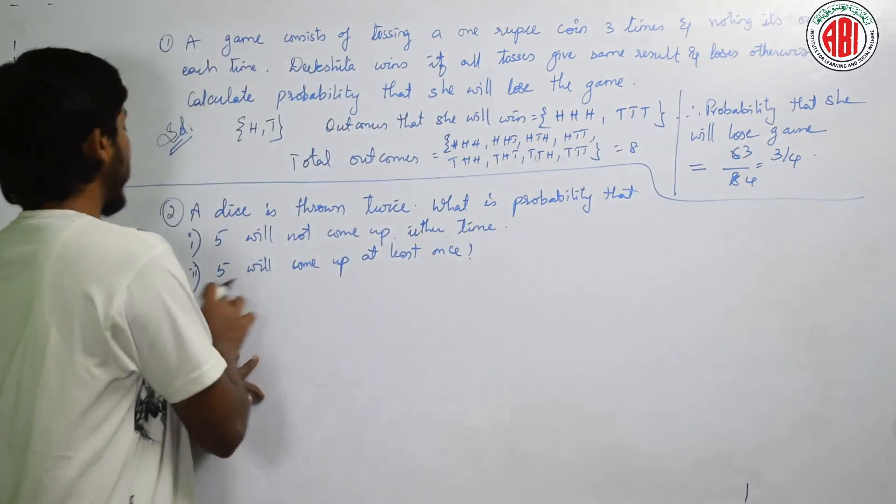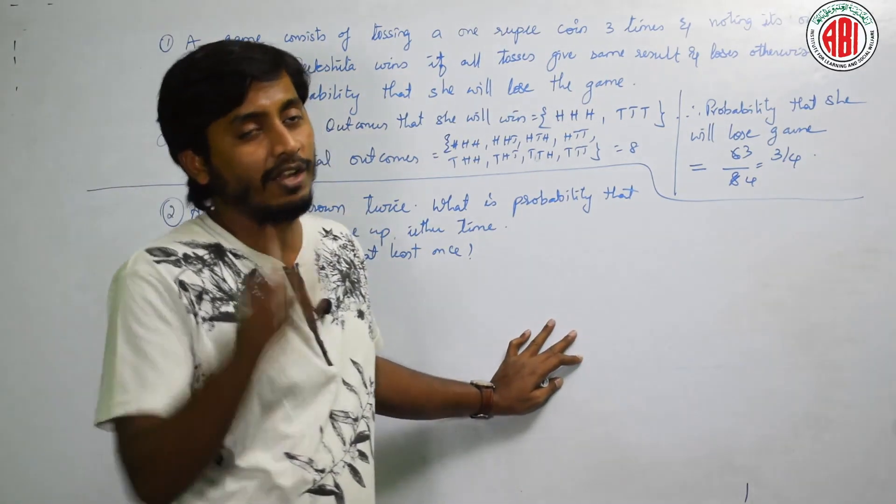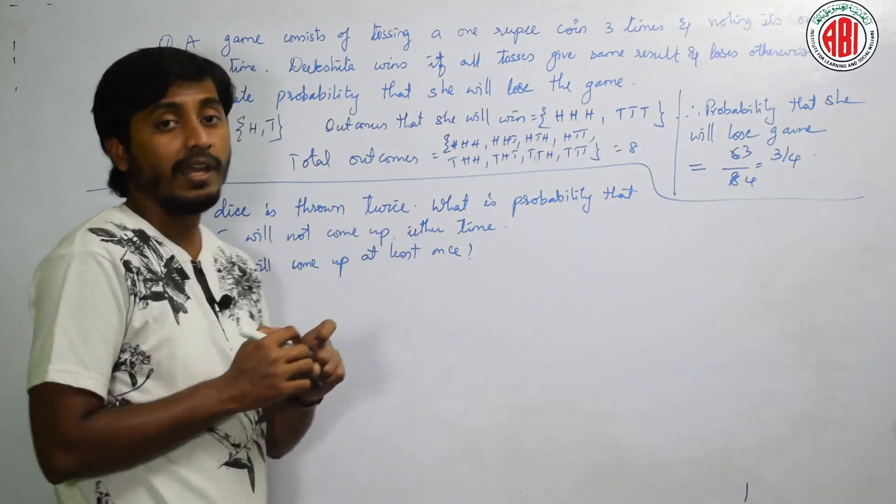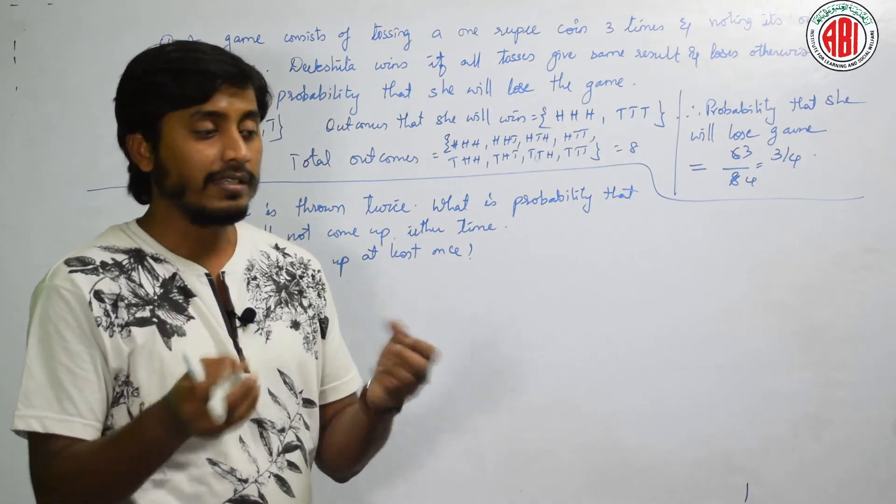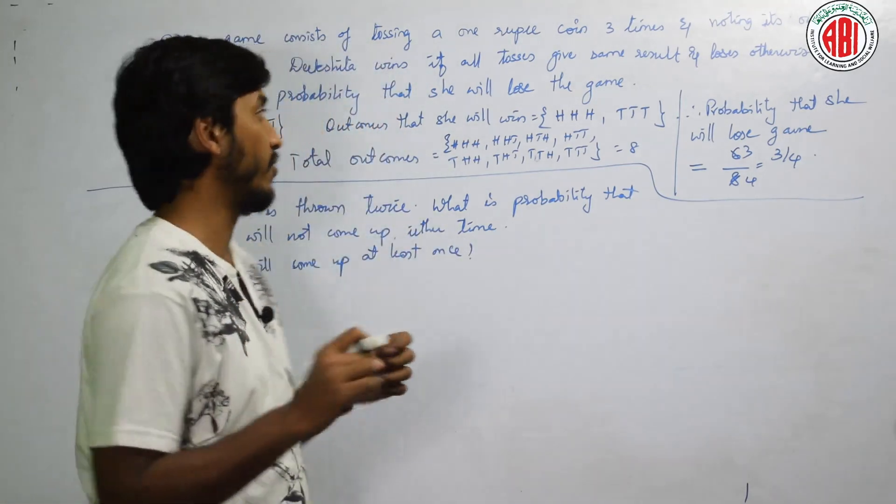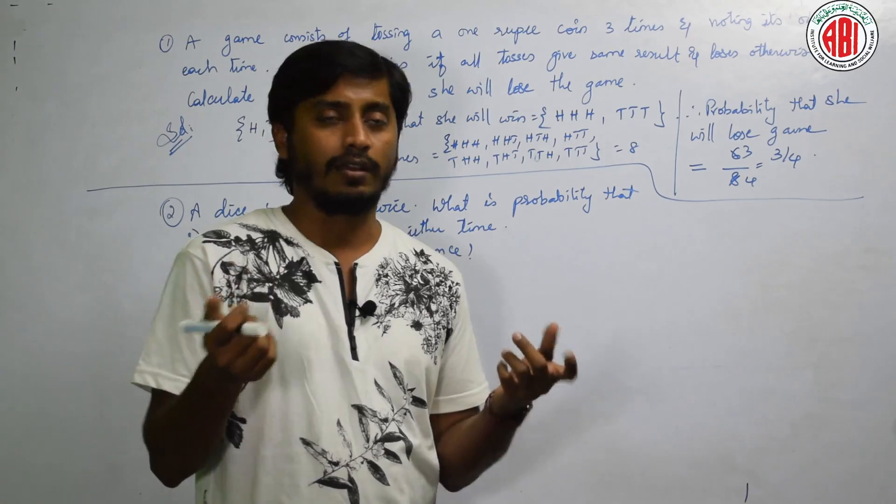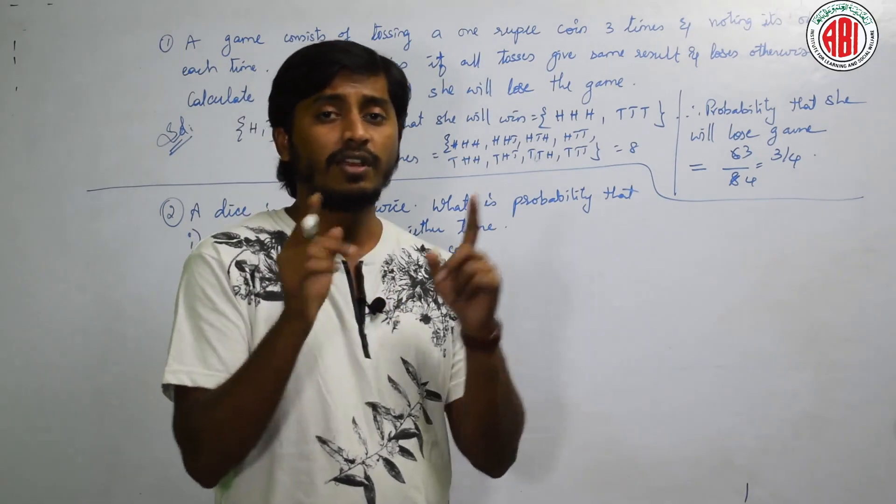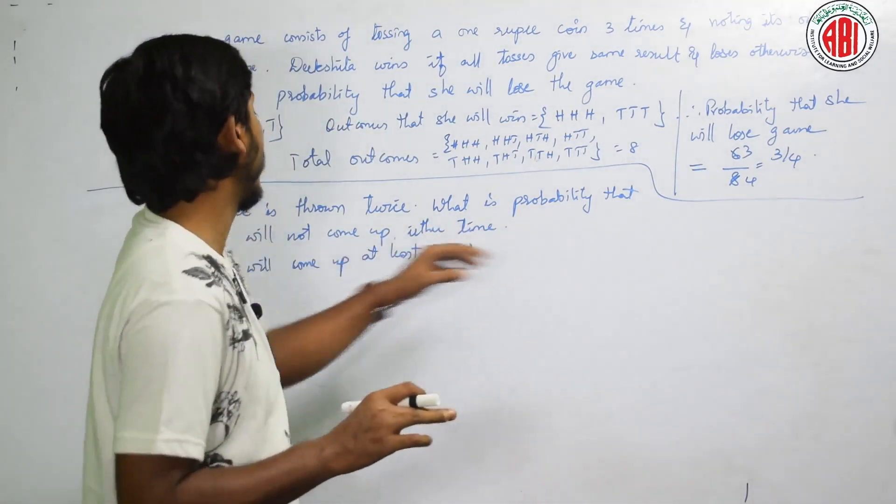How does T say? THH, THT, TTH or TTT. Total 8 outcomes. These two are winning probability, which means failure is 6 by 8. Answer is 3 by 4. Now let us see, next question. A dice is thrown twice. This is one of the most important question and you have to try to concentrate here. A dice is thrown twice. Remember, 1 dice 2 times throw or else 2 dice 1 times throw, both the experiments are same. Do not get confused.